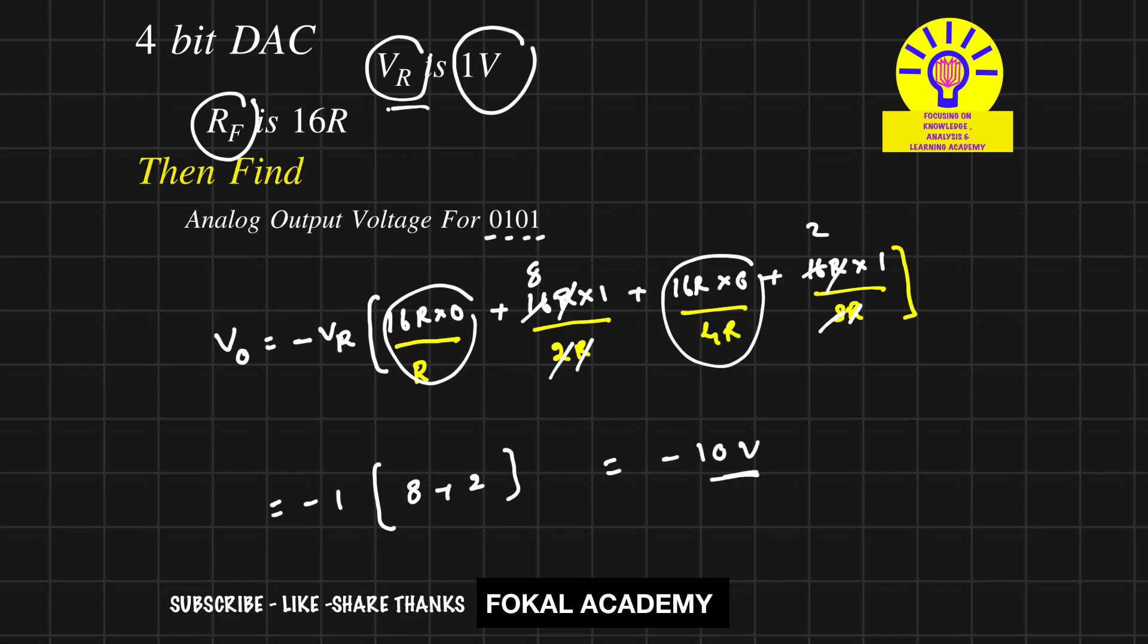And this is the output voltage for the given 4 bit DAC whenever 0101 is given. And this is the process of simplification.